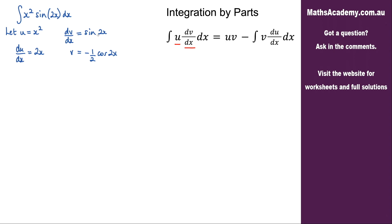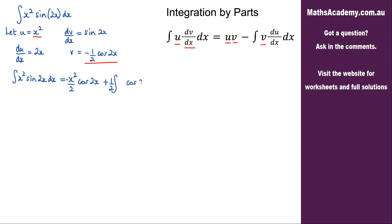Now that I have everything I need, I can apply the integration by parts formula. The integral of x squared sine 2x with respect to x equals u times v — so x squared times negative one half cosine 2x — minus the integral of v times du/dx. That gives us negative one half cosine 2x, with the negative half brought outside the integral, multiplied by 2x with respect to x.